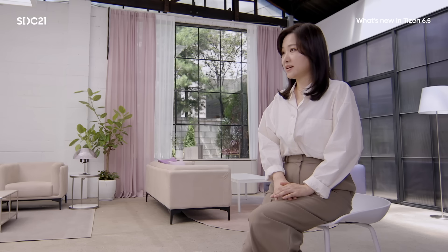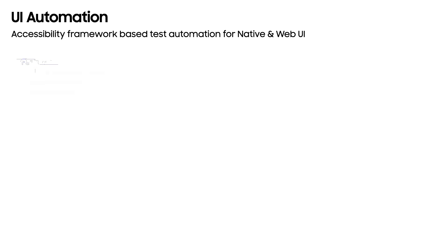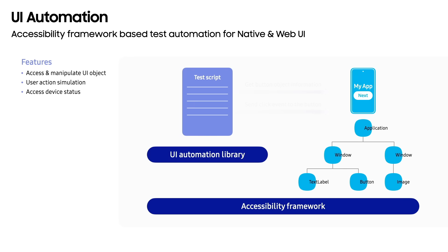We have added a UI automation framework for web and native applications. It provides programmatic access to UI elements and can manipulate the UI by means other than standard input. You can make automated UI test scripts using the Tizen UI automation system. Mr. Kwon will continue with the rest of the presentation.